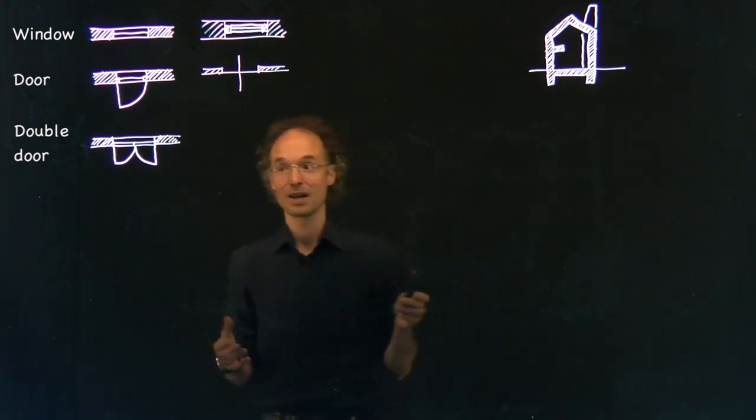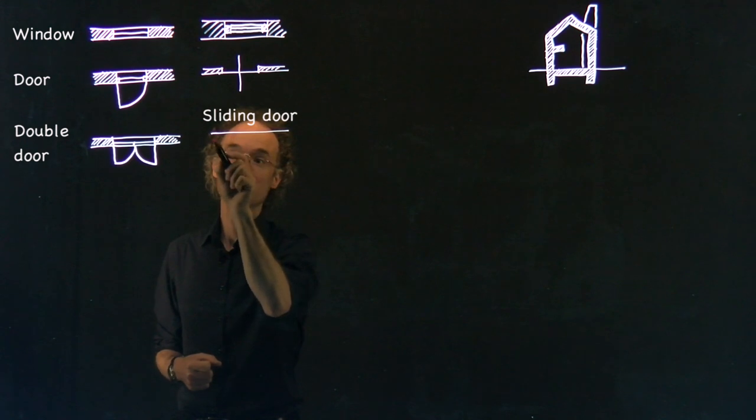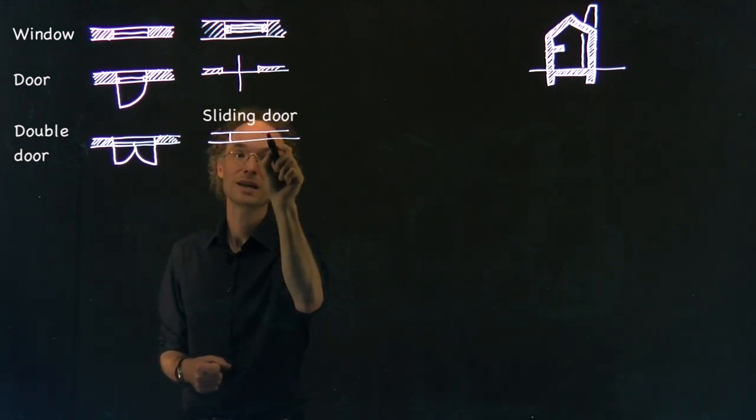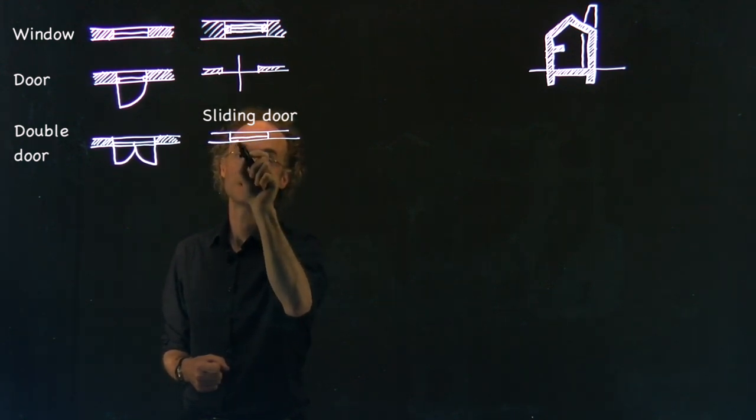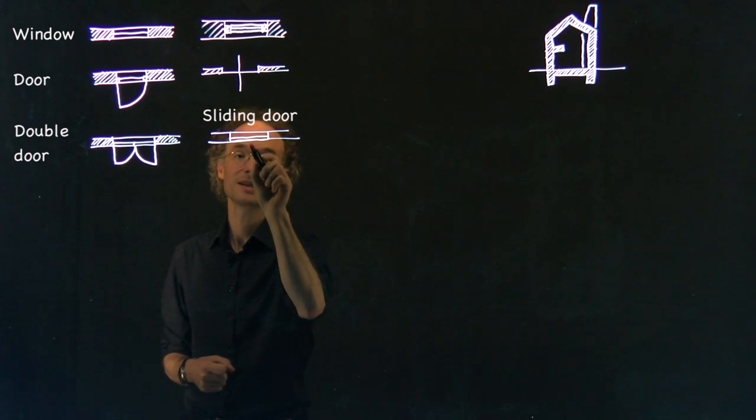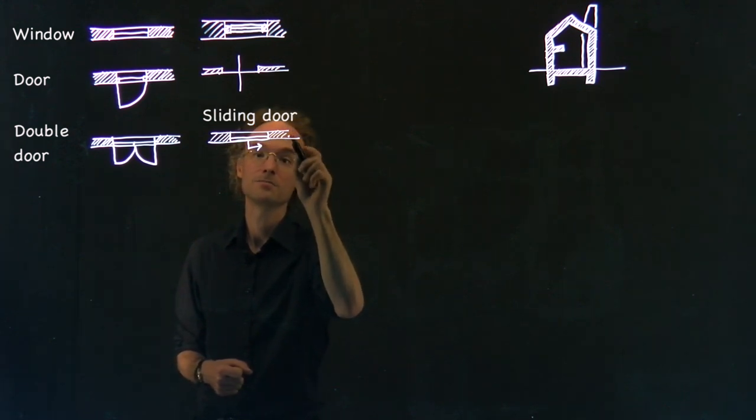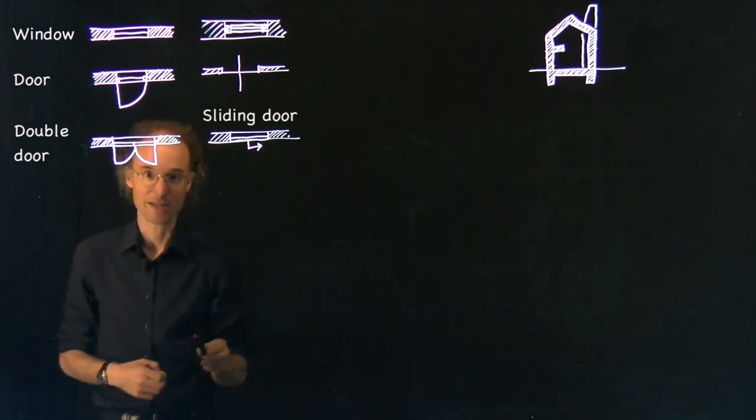There are other types of doors, sliding doors for example. It is more or less the same procedure. The opening in the wall, the sliding door itself, and to indicate that it can slide you add an arrow. And if you have double sliding doors you do the same but then arrows in two directions.